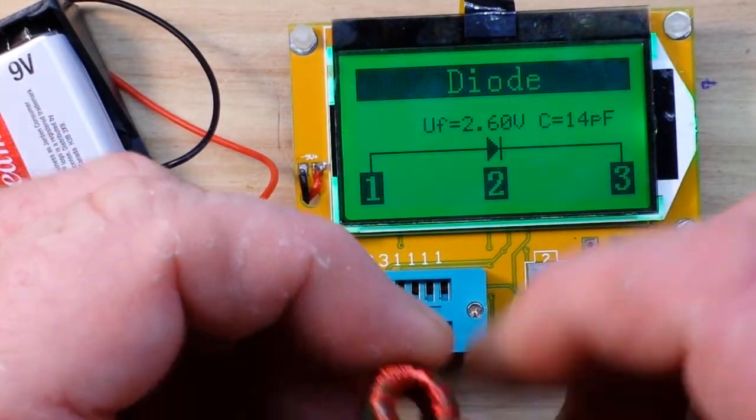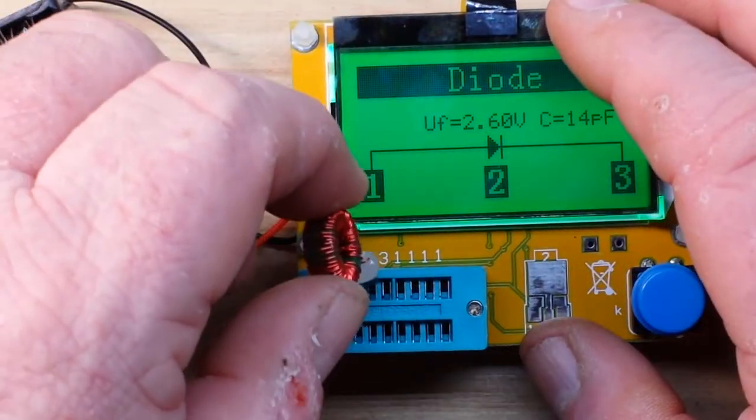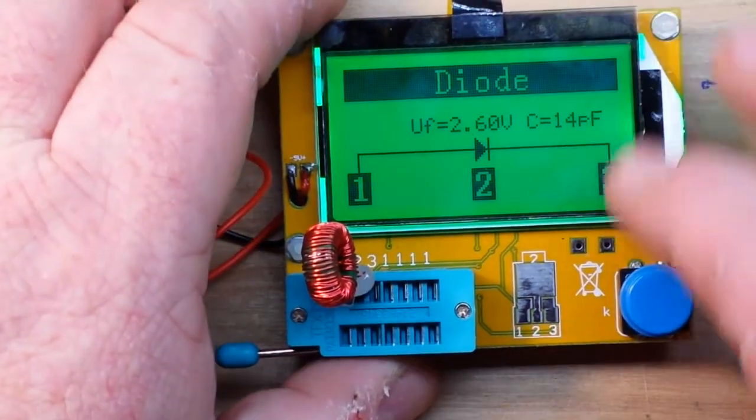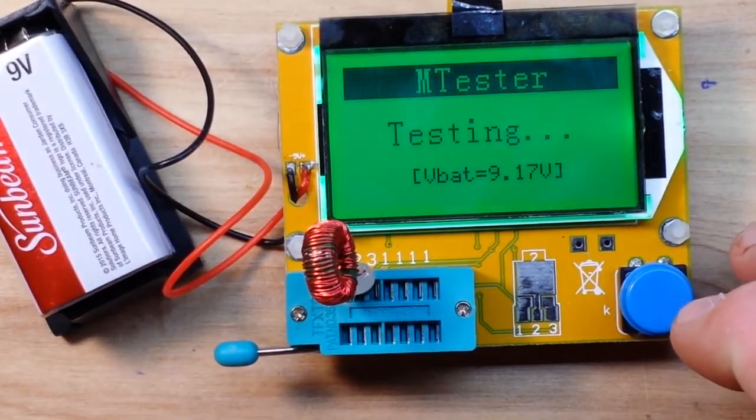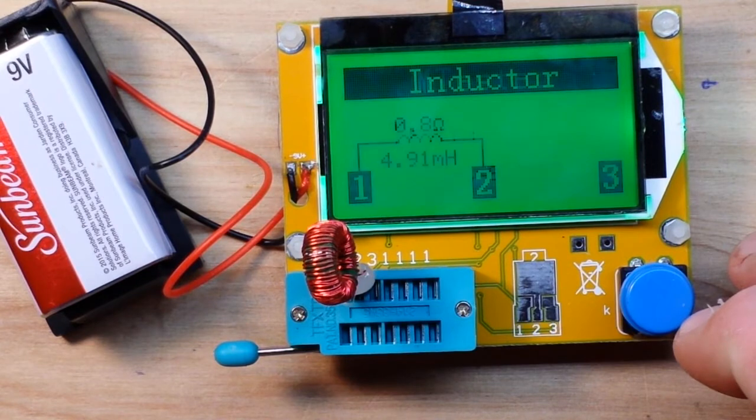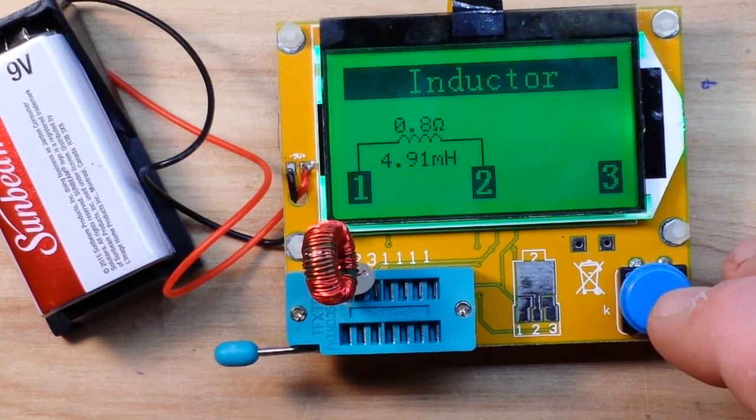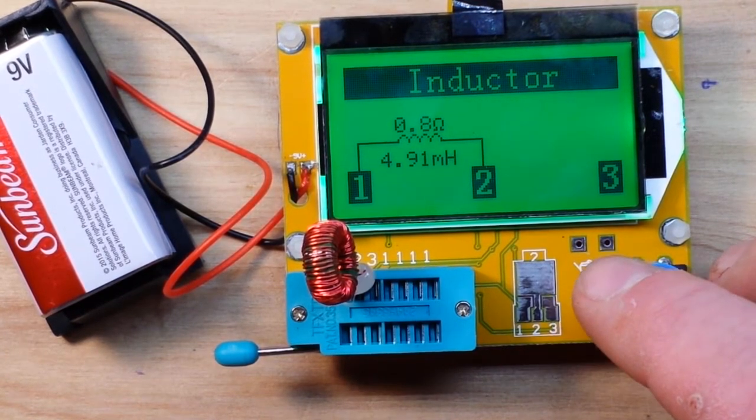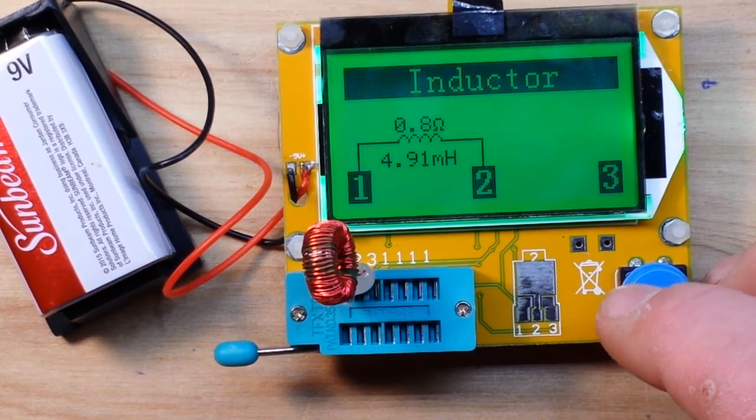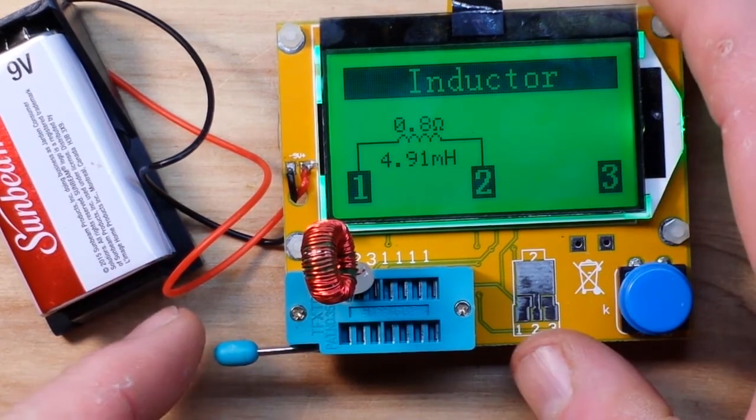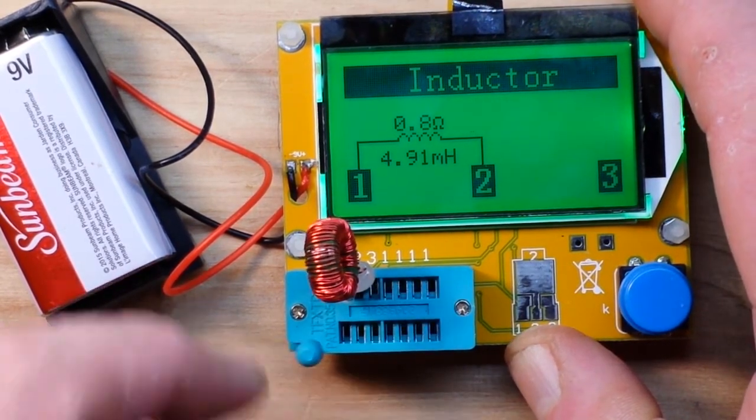Alright, I'll quit boring you with this. Last one, one of my homemade inductorinos. Inductor, resistance of 0.8 ohms and inductance of 4.91, let's just call it 5 millihenries. So very cool.